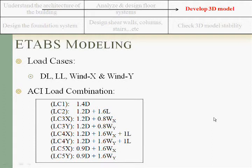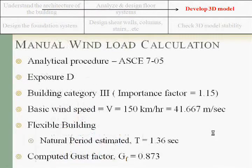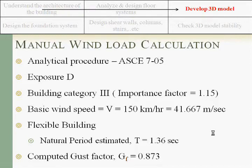The load combination that we have taken is assumed by the ACI 2005. In the manual wind load calculation, we have taken exposure D because the structure was open to the water surface, and the building category is III with importance factor 1.15, and basic wind speed as discussed with major consultants in Qatar is 150 km/hr, 41.667 m/sec.